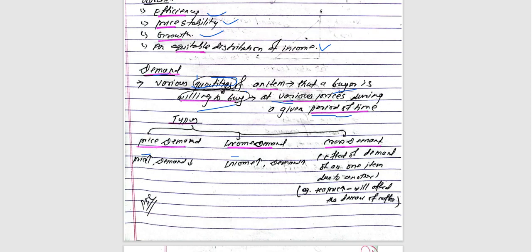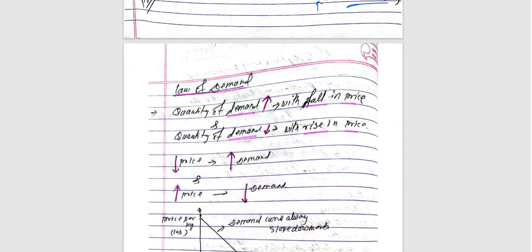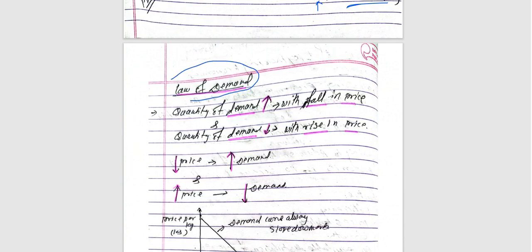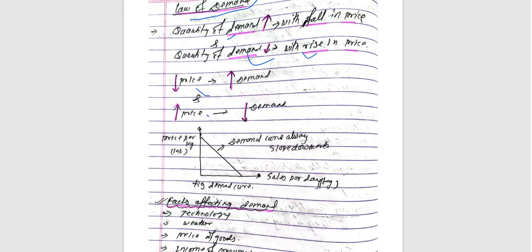Price demand means the relationship between price and demand. The effect of demand on one item due to another item is cross demand. The quantity demanded increases when the price is lower, and decreases when the price is higher. The factors affecting demand include the price of goods, income of consumers, government policy, and availability of materials.